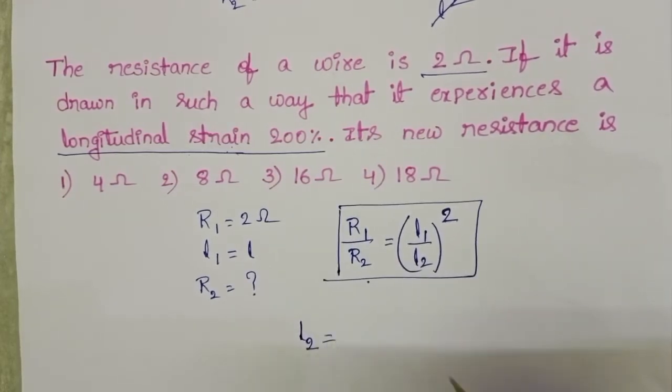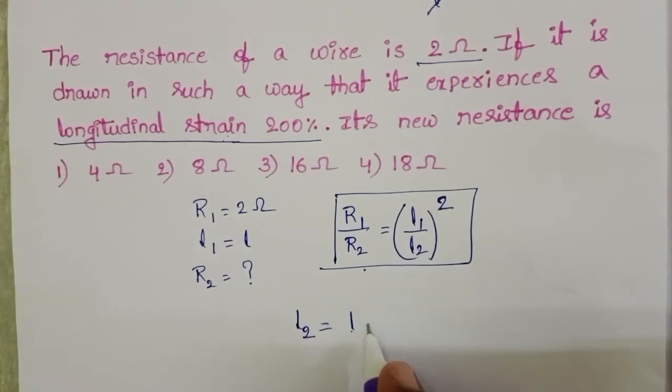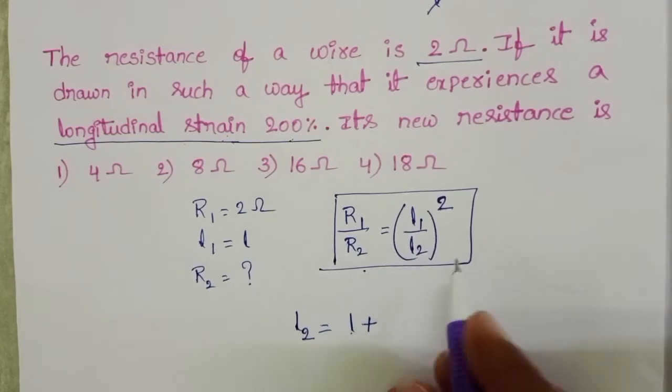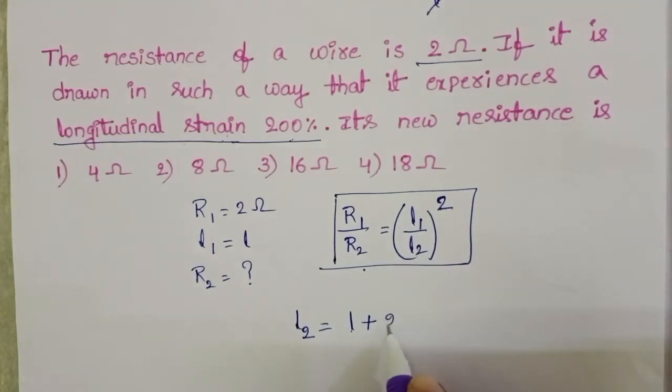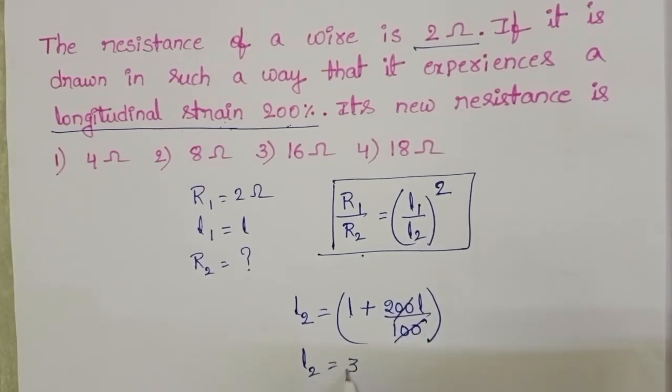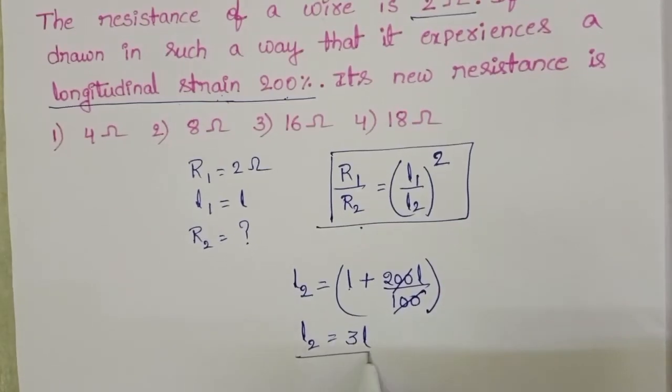In the second case, L2 equals initial length L plus how much it elongates, 200%. So L plus 200L by 100. L2 equals 3L.